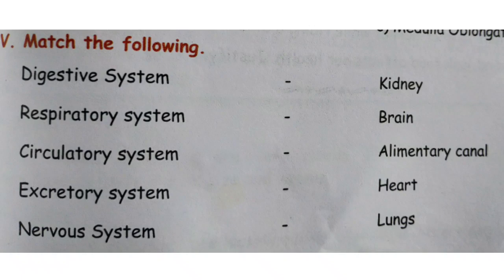Circulatory system — very good — matches with heart. Excretory system matches with kidney. Nervous system matches with brain. Please check your answers, children.